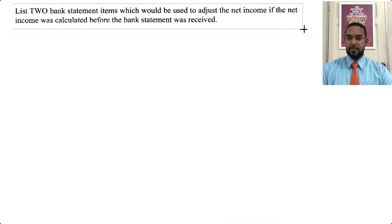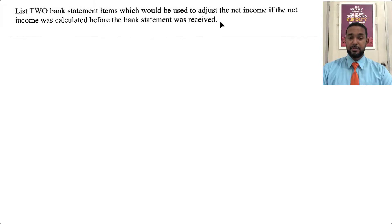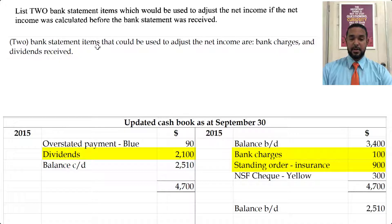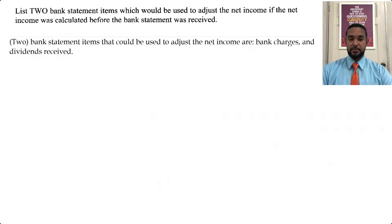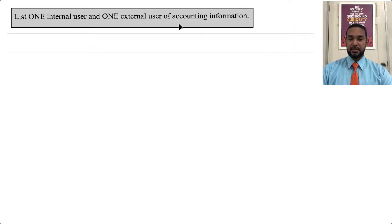Part B asks us to list two bank statement items which would be used to adjust the net income if net income was calculated before the bank statement was received. Two of those items are bank charges and dividends. You could also have used the standing order for insurance. So: two bank statement items to adjust net income — bank charges and dividend received.